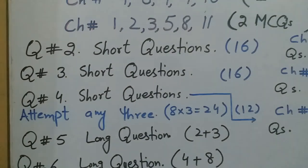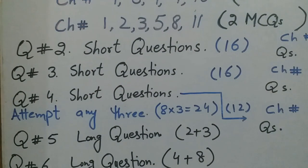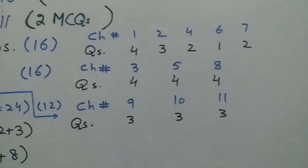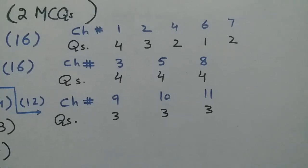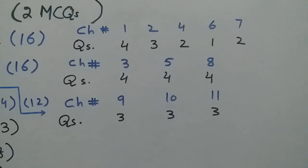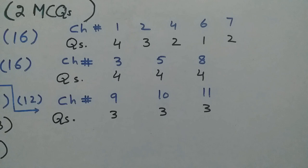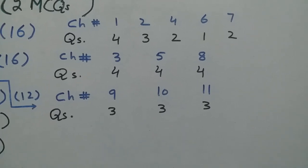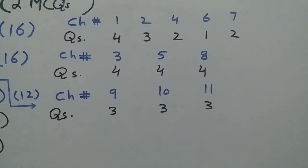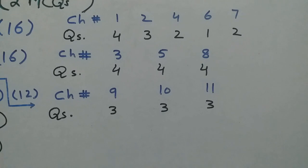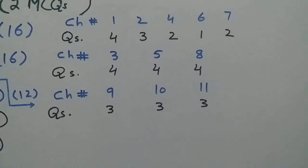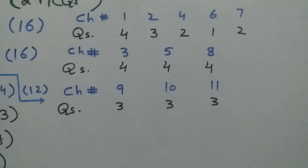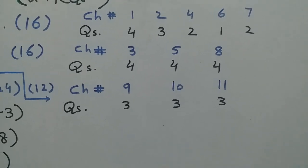Question number 4 is again short questions — 9 total, attempt 6, worth 12 marks. This covers chapters 9, 10, and 11, with 3 short questions from each chapter. You must attempt 6 out of 9, and the marks will be 12.